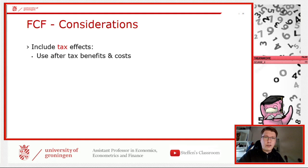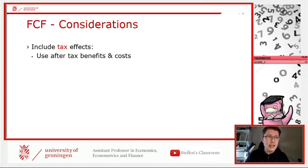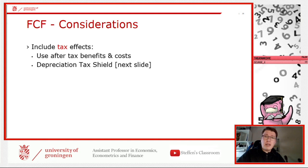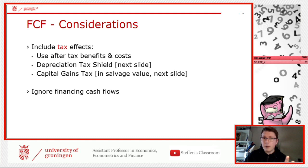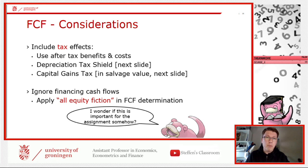We must also include tax effects — that means using after-tax benefits and costs. Remember when we calculated free cash flow, we taxed it by multiplying by (1 minus Tc), where Tc is the tax rate. Alongside this, there is something called the depreciation tax shield and capital gains tax. Ignore the financing cash flow — this has been said many times and it will matter for the assignment.